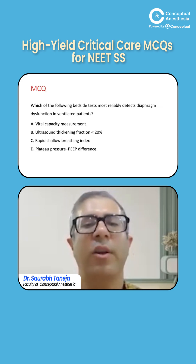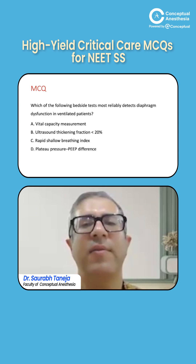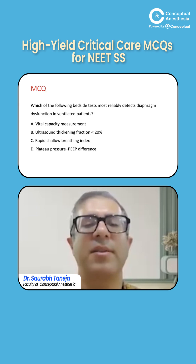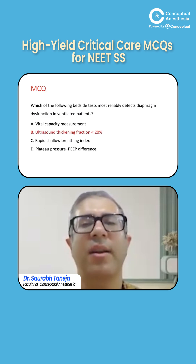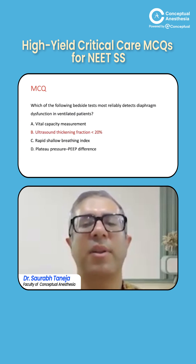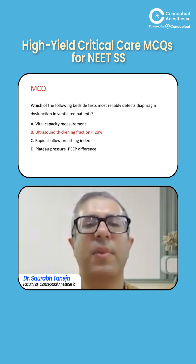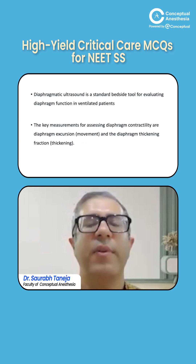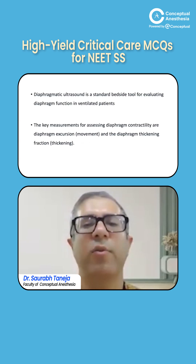Which bedside test most reliably detects diaphragm dysfunction in ventilated patients? The most reliable test now being used is diaphragmatic ultrasound, specifically looking for a thickening fraction less than 20%. Diaphragmatic ultrasound is a standard bedside tool for evaluating diaphragmatic function in ventilated patients.